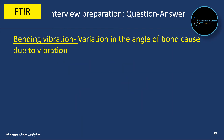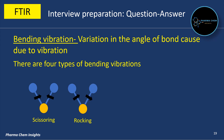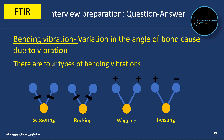Bending vibration is a variation in the angle of a bond caused due to vibration. There are four types of bending vibration: scissoring, rocking, wagging, and twisting.